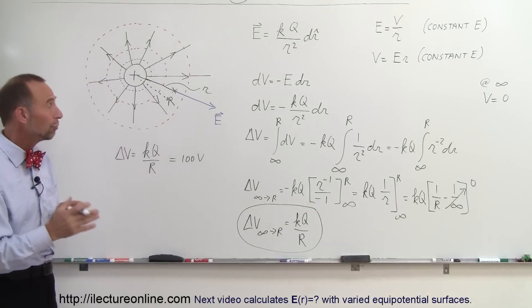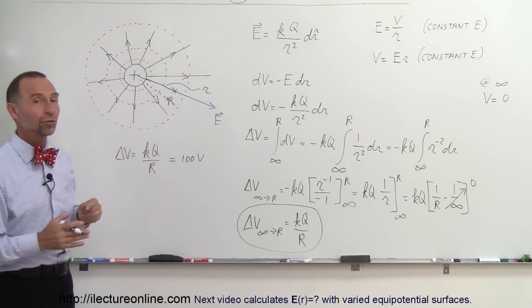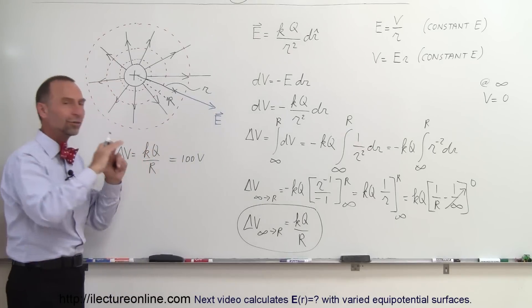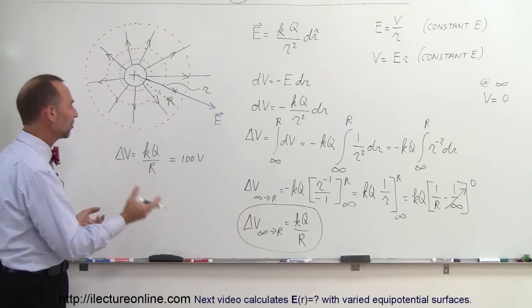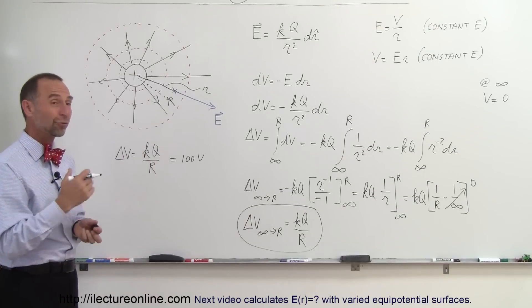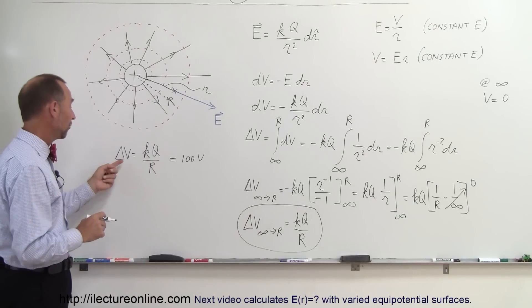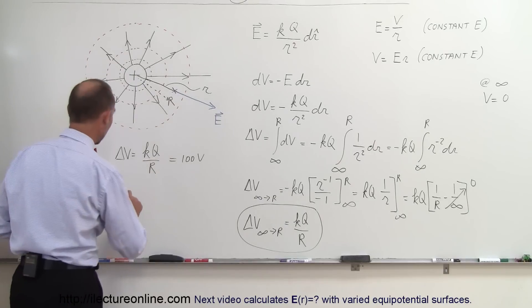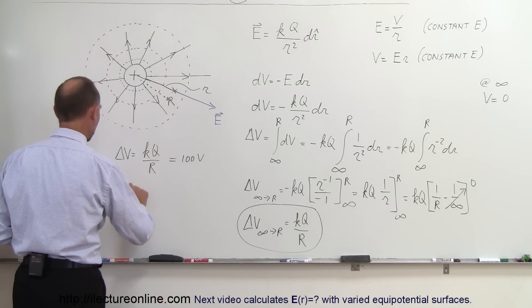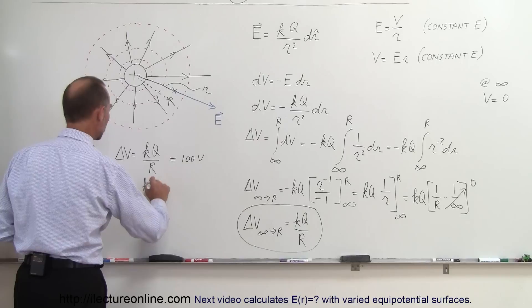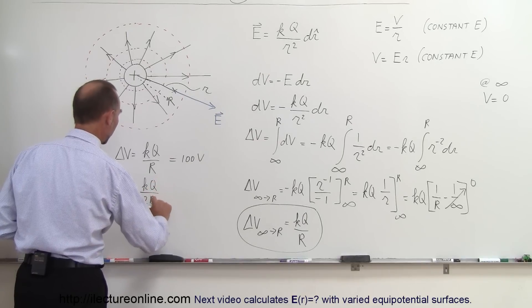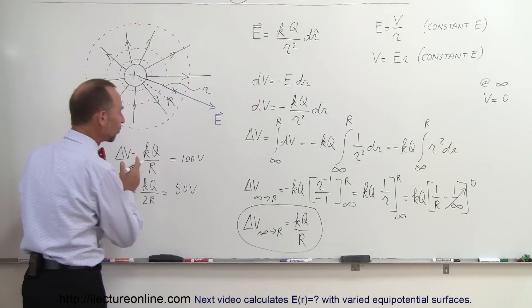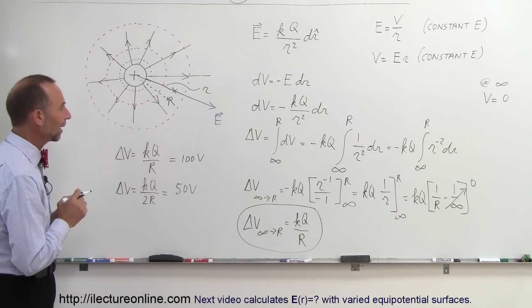How far do I have to move for that to be half the potential? I will have to move further out, so I want to find another equipotential surface that now represents half the voltage. For delta V to be half of that, I need R to be twice as much. So in that case, delta V equals KQ divided by 2R, and of course divide that by 2, we get 50 volts. Now I'm down to half the voltage than what I had before.